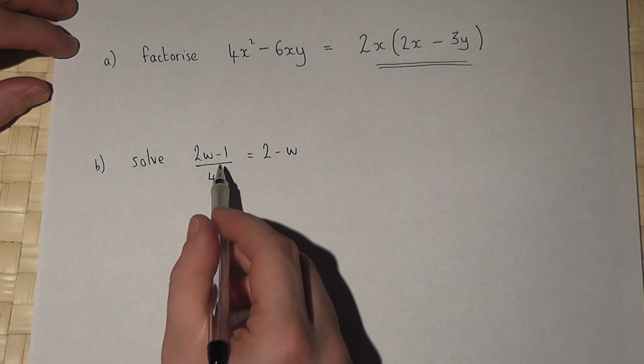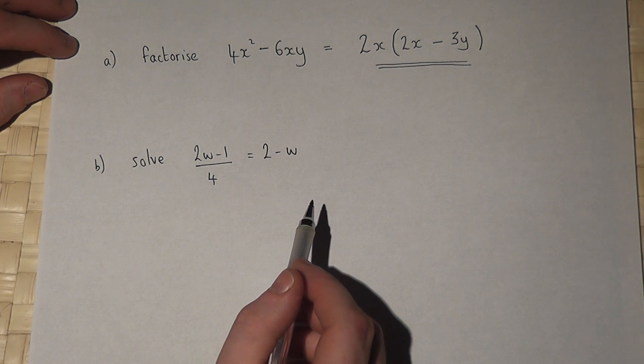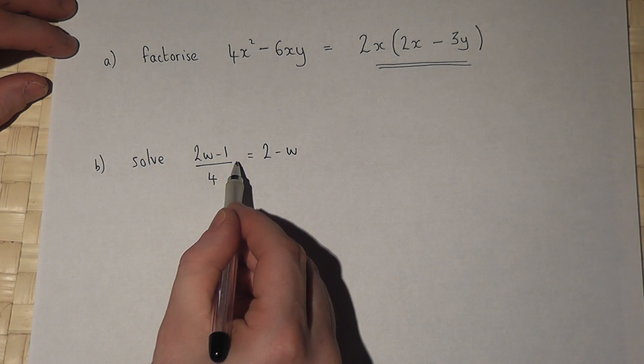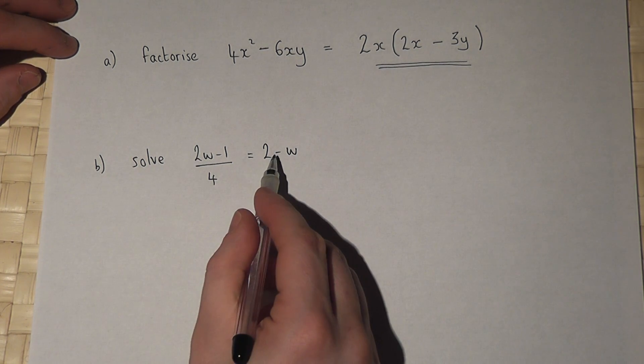In the second part we have to solve an equation. So we have 2W minus 1 all over 4 equals 2 minus W.